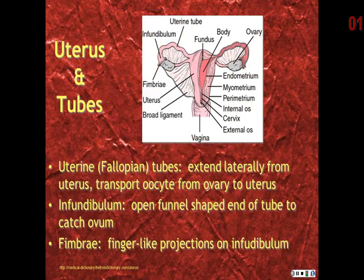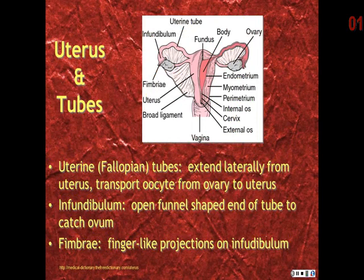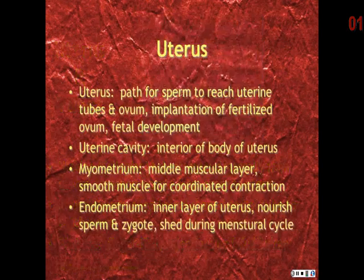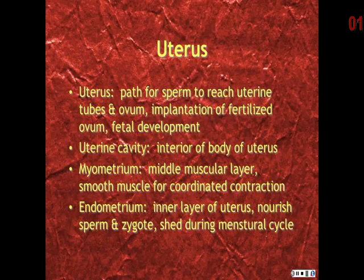The fallopian tubes transport the oocyte from the ovary to the uterus. The infundibulum is the funnel-shaped end of the tube which catches the oocyte; there are finger-like projections on the infundibulum to help draw the oocyte into the tube. The uterus provides a path for sperm to reach the uterine tubes and ovum.